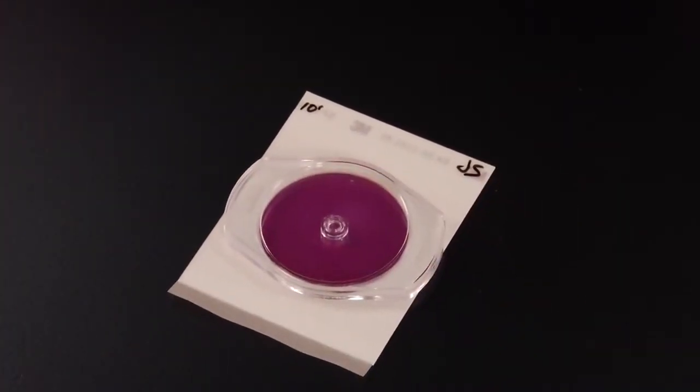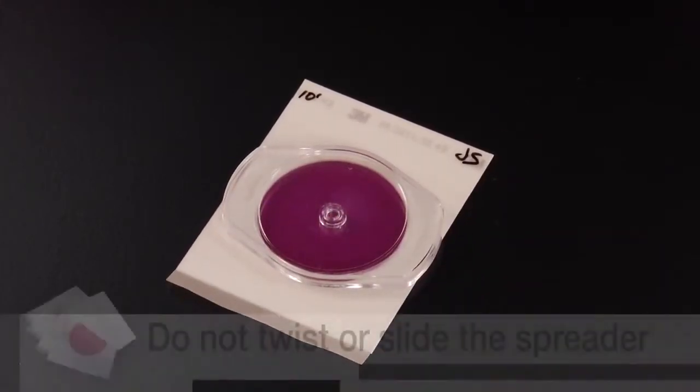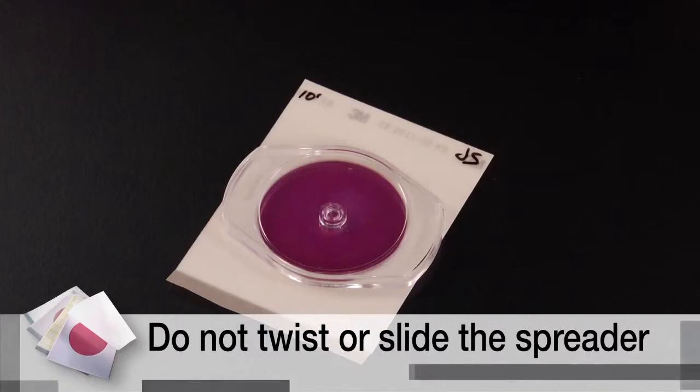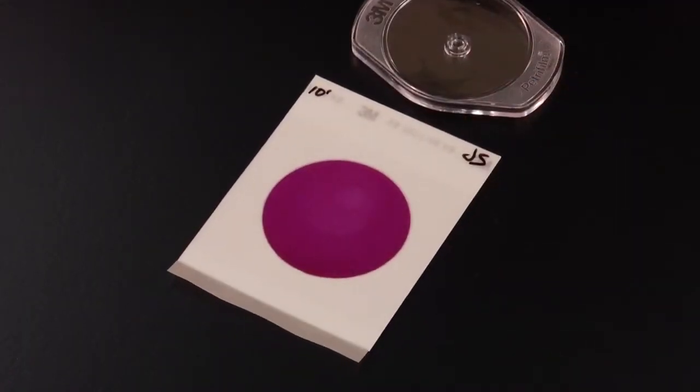Then gently apply pressure on the center of the spreader to distribute the inoculum over the entire circular area. Do not twist or slide the spreader. Lift the spreader and allow 1 minute for the gel to form.